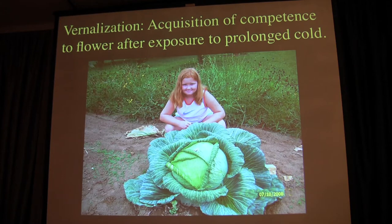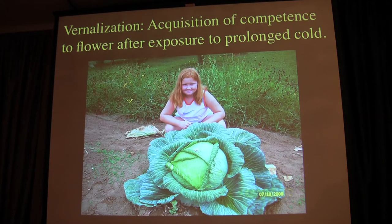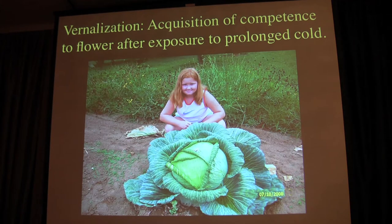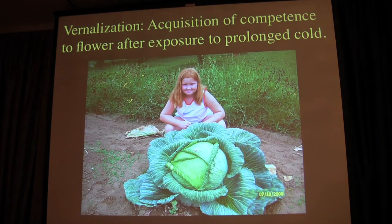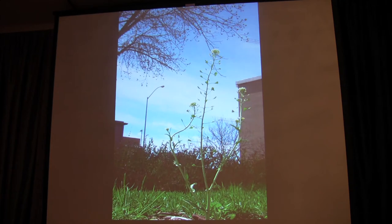First, a definition. Vernalization is the acquisition of competence to flower after plants have been exposed to cold. Domesticated cabbage is a good example of a plant with a very strong requirement for vernalization. Breeders have really put this in strongly so that cabbage doesn't flower. Most of you probably haven't seen a cabbage plant flower because they will only flower if left in the field over winter, in which case it's pretty spectacular — the flower stalk can be taller than I am. That block to flowering is very important for cabbage as a crop.